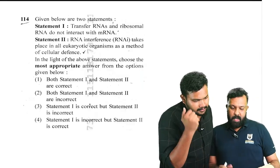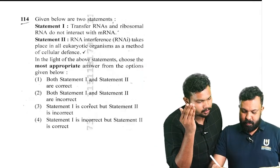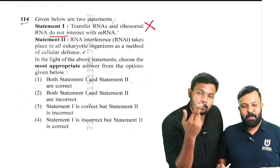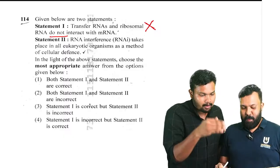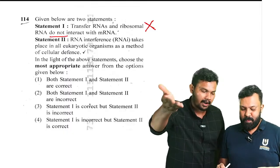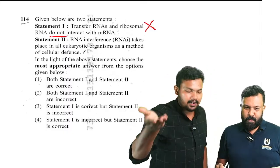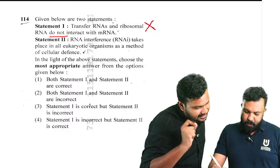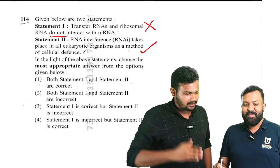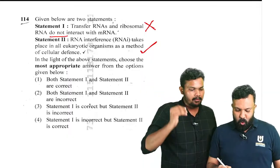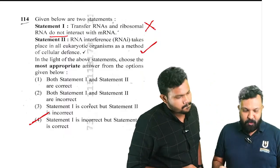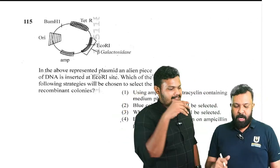Question number 114: statement one — transfer RNA and ribosomal RNA do not interact with the mRNA. That is incorrect because tRNA does interact during translation. Statement two — RNA interference takes place in all eukaryotic organisms as a method of cellular defense — that is correct. So statement one is incorrect and statement two is correct — option four is the best answer.